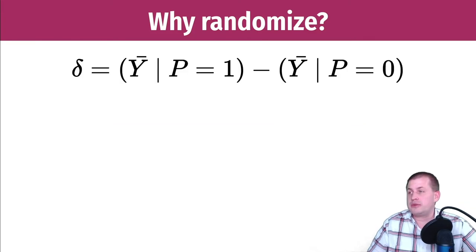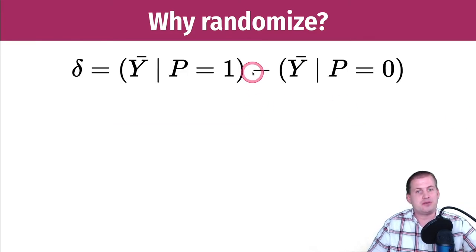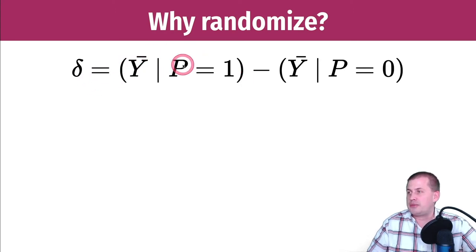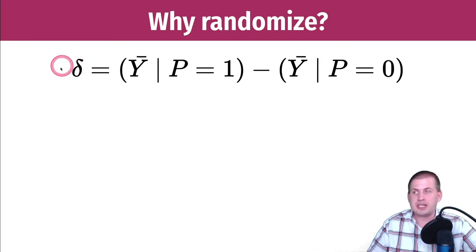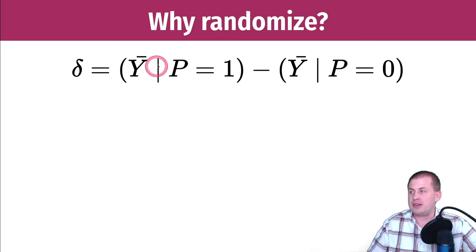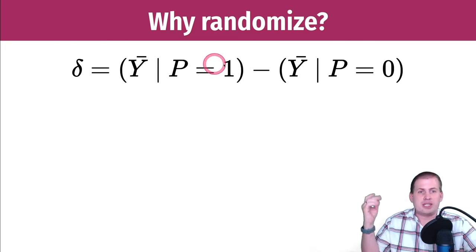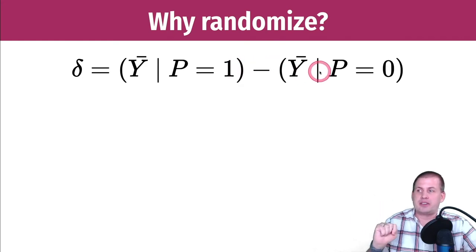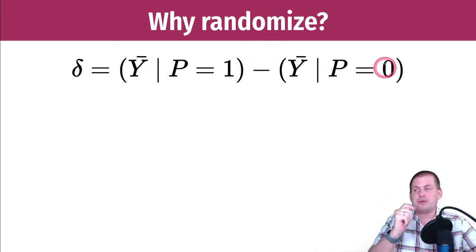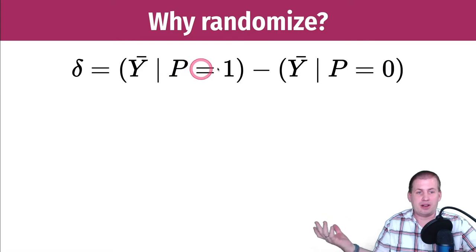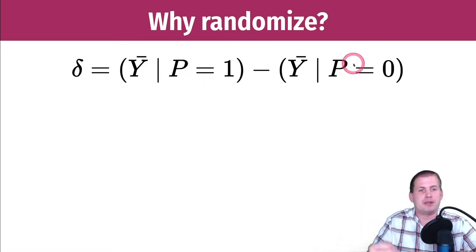Because that doesn't work, we have to take the average. That's what this fancy formula here is. This y-bar just means average, and p equals one means when the program is one. So this formula reads: the causal effect is equal to the average outcome given that the program is one, or given that the program is on, minus the average outcome given that the program is zero.